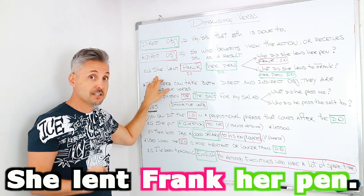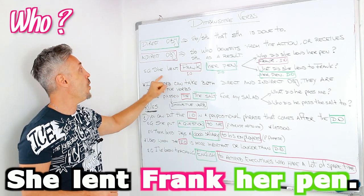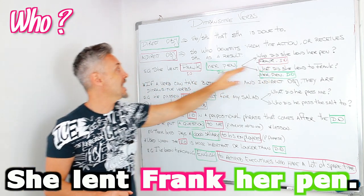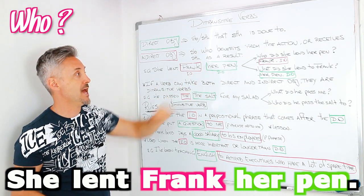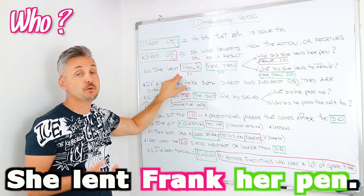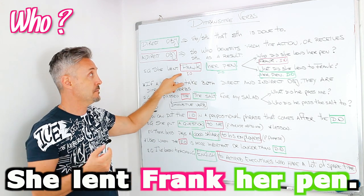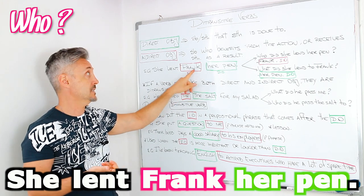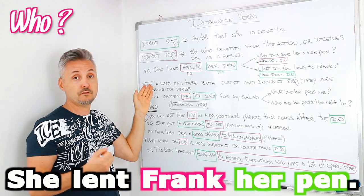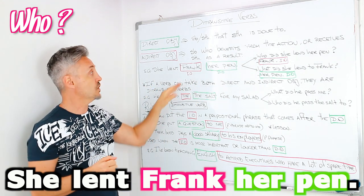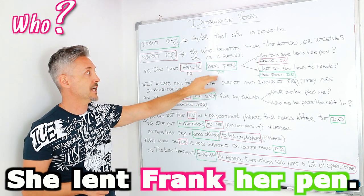To look at the indirect object, we need to ask who — in this case, who did she lend her pen? And the answer would be Frank, the indirect object. Frank is the one who benefits from the action, from lending. So, indirect object: Frank, and direct object: her pen.